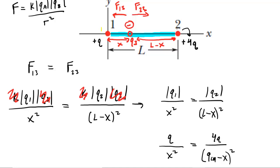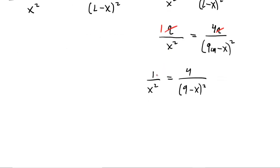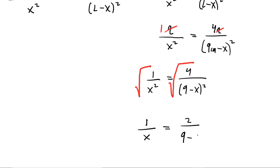Dividing Q from both sides cancels it out, leaving a one on the left. So we have the simple equation: 1 over x squared equals 4 over (9 minus x) squared. One trick for solving this is to take the square root of both sides — square root the numerator and denominator separately. The square root of 1 is 1, square root of x squared is x, square root of 4 is 2, and square root of (9 minus x) squared is just (9 minus x).